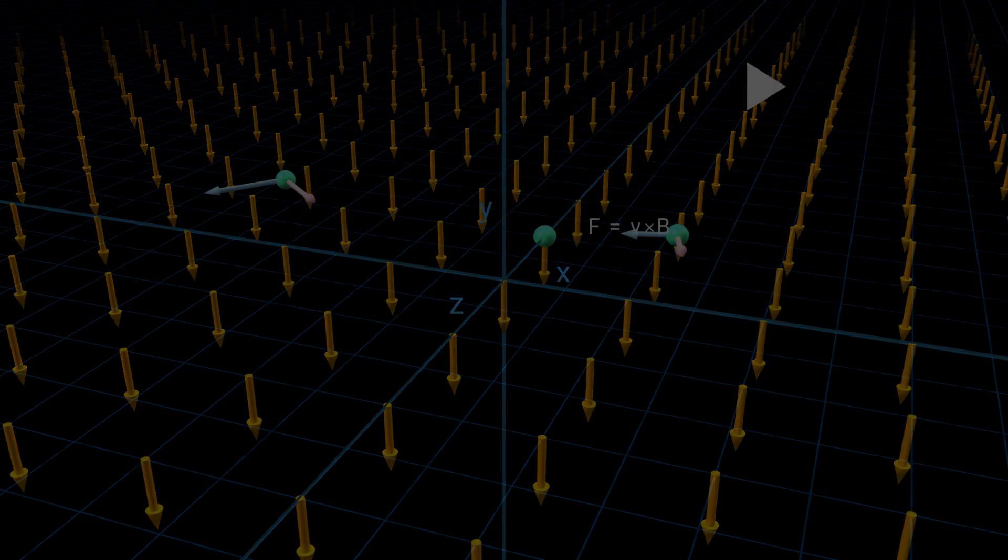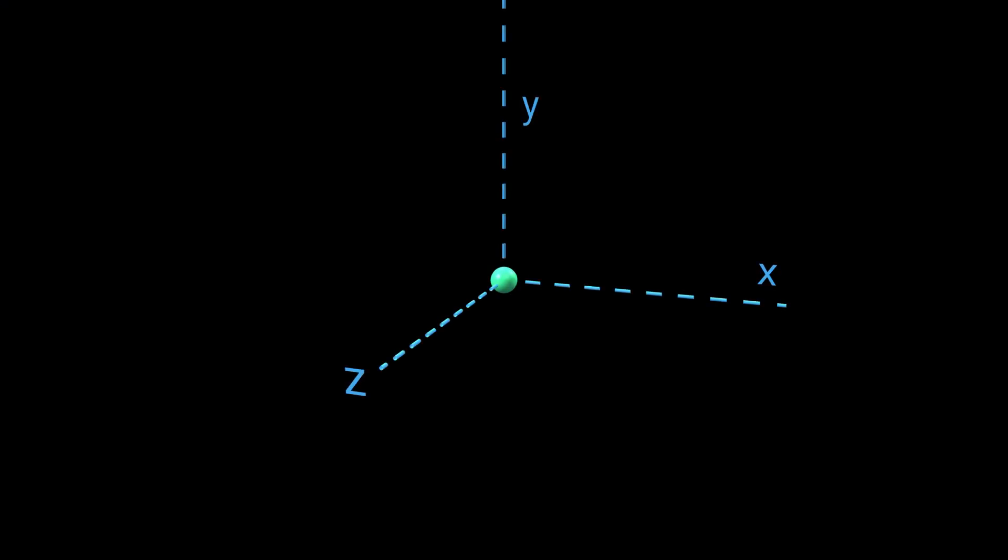Now, let's explore this relationship in more detail. Say we have a particle, and the magnetic field points straight down. The cross-product formula determines for each possible velocity the resulting magnetic force.